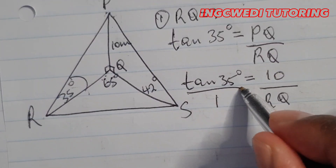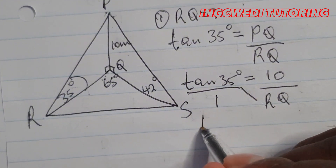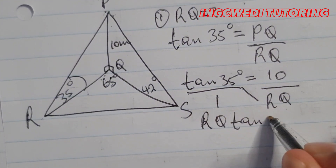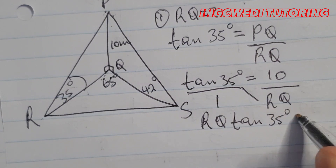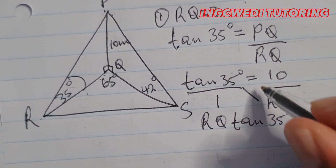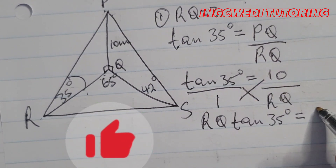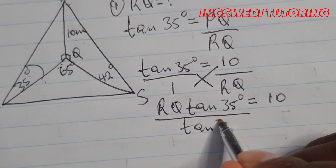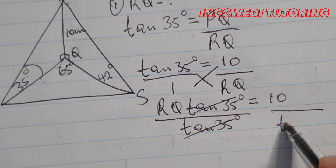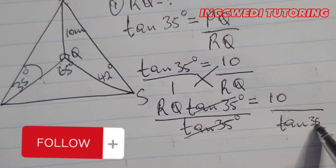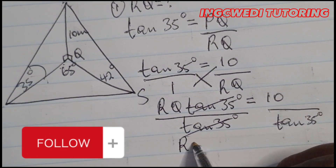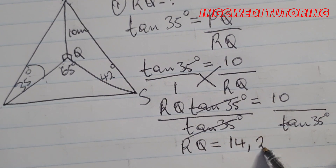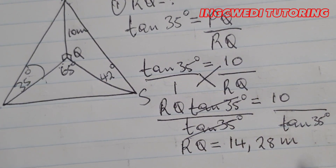Now that this is over 1, we cross multiply: RQ times tan 35 degrees equals 1 times 10, which is 10. We divide by tan 35 degrees on this side. RQ equals 14.28 meters.